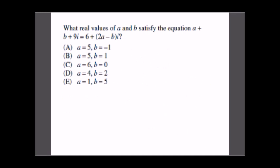The question is: what real values of a and b satisfy the equation a + b + 9i is equal to 6 + (2a - b)i? In this we simply have to equate the variables on both sides of the equation. So let's solve this.